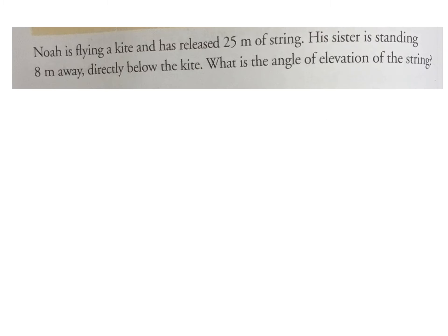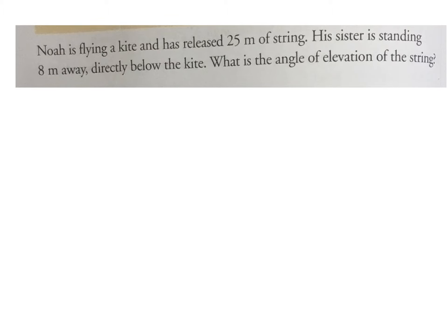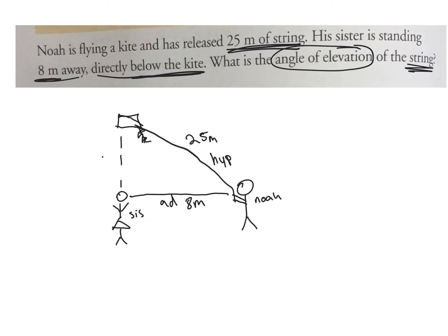Noah is flying a kite and he has released 25 meters of string. His sister is standing 8 meters away directly below the kite. What is the angle of elevation of the string? This is Noah, this is the kite string, which is 25 meters. The sister is standing 8 meters away. Which angle are you trying to find? Angle B, because it's with the horizontal looking up to an object.